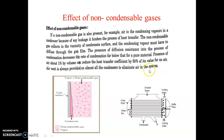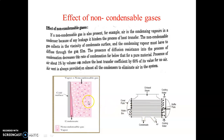Therefore, an air vent is always provided in a condenser to eliminate air from the system. In a typical condenser, pipes carry cooling water and steam condenses on the outside of the pipes. The air vent is provided to remove non-condensable gases like air, since air does not condense. Removing this air increases the heat transfer rate significantly.